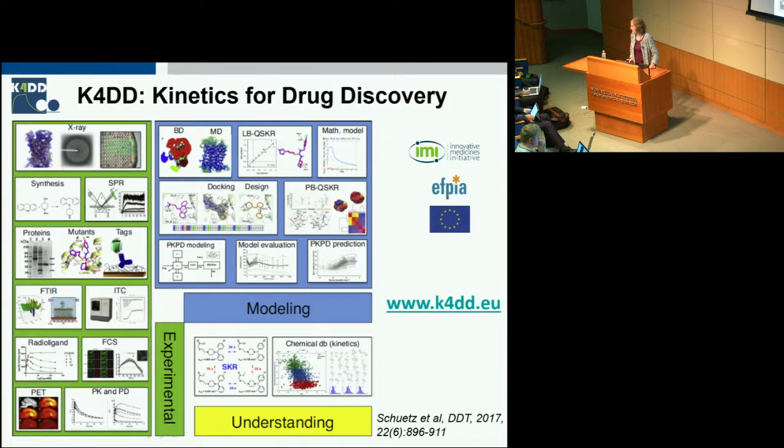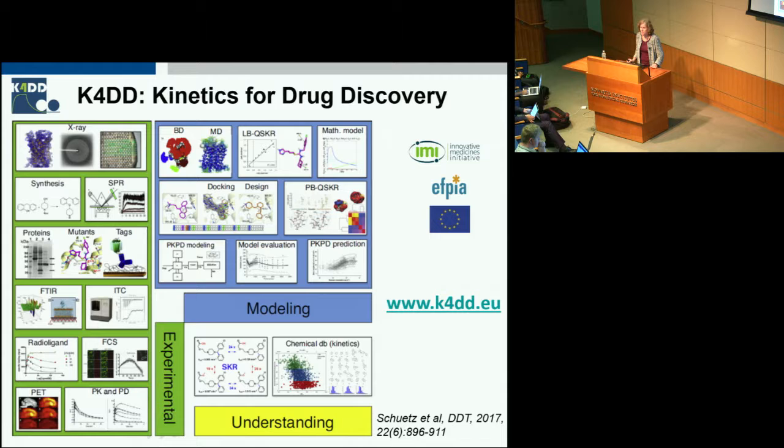What I want to show you today is basically three short topics: two about what we've learned about determinants of drug binding kinetics from combined experimental and computational work — one giving an easy message and one a more complicated one — and then a method we've developed called tau-RAMD, random acceleration molecular dynamics, for computing drug-protein residence times.